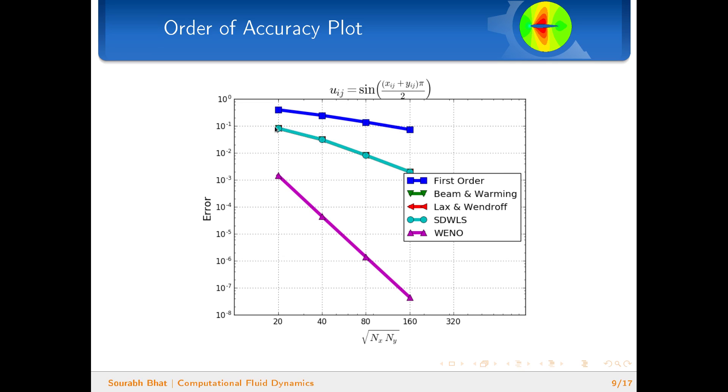In fact, all these three second order schemes almost overlap each other. The fifth order WENO scheme has the highest slope of five.